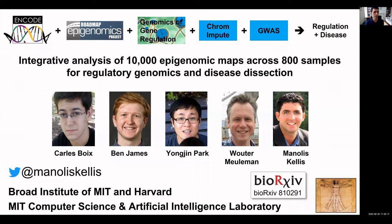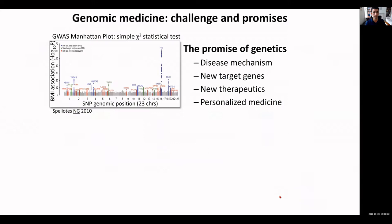He's been combining ENCODE, Roadmap Epigenomics, Genomics of Gene Regulation, systematic chromatin imputation, and genome-wide association studies to understand gene regulation and disease. The paper is on bioRxiv — you can just Google it and you will find it.